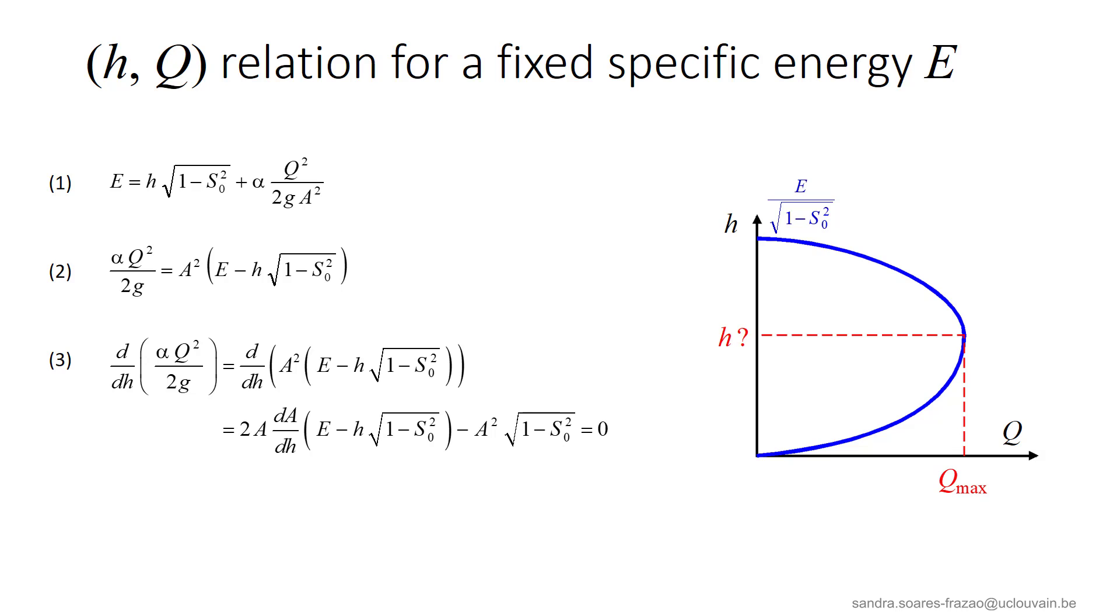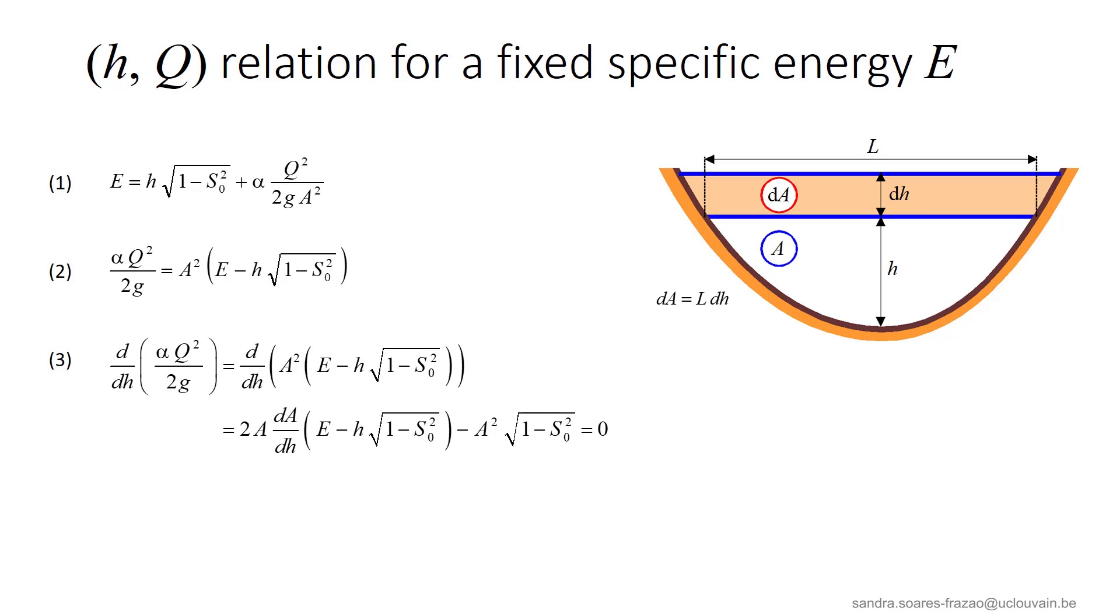To find the depth corresponding to the maximum discharge, we take the derivative of equation 2 with respect to the depth H. In equation 3, as we see after evaluating the derivative, we need to evaluate also dA dH. This can be done by looking at the sketch of a cross-section. For a small increase in depth dH, the corresponding increase in area dA can be approximated at the first order as L dH. So we can replace dA dH here in equation 3 by L and obtain equation 4, from which we deduce the relation giving the depth of the maximum discharge for a given specific energy E.